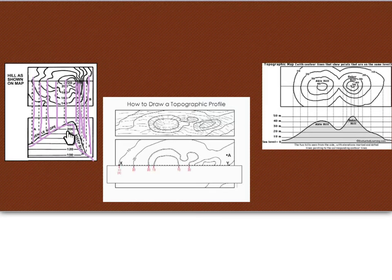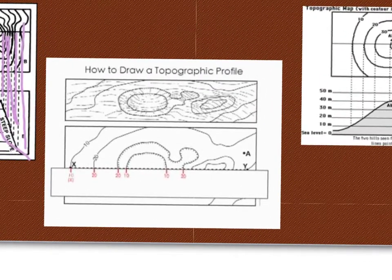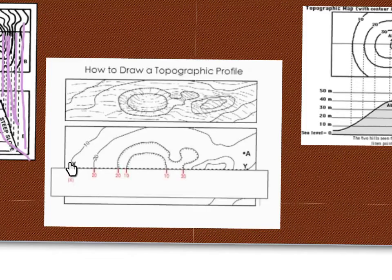And then the other way that you need to do it if the graph isn't below is to get a separate sheet of paper and just do the same thing. Make a mark every time it comes in contact with the contour line, and then you would take this piece of paper and stick it on a piece of graph paper and graph it, so then you would have like 10, 20, 20, 10, 10, 20, and then you'd have some kind of graph going on there.